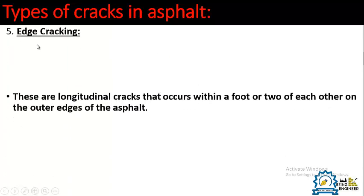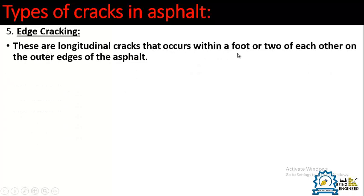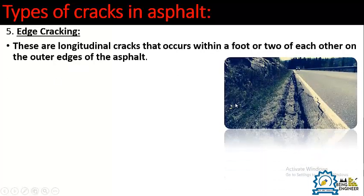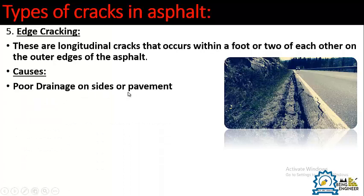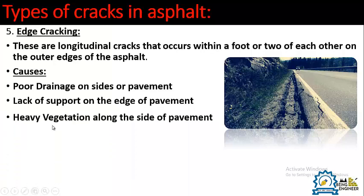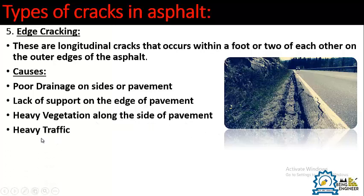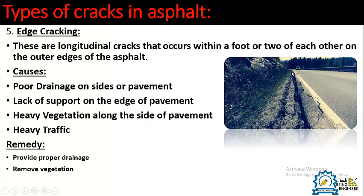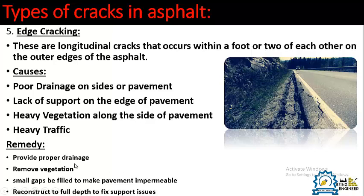Number five is edge cracking. These are longitudinal cracks that occur within a foot or two of the outer edges of the asphalt — as seen in the picture, the cracks appear along the road edges. Causes include poor drainage on the sides of the pavement, lack of lateral support, heavy vegetation along the side, and heavy traffic. Remedies include providing proper side drainage, removing vegetation, filling small gaps to make the pavement impermeable, and reconstruction to full depth to fix support issues.